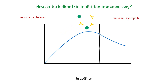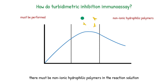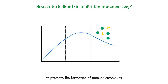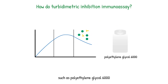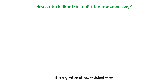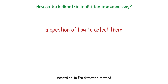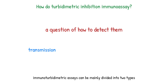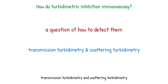In addition, there must be non-ionic hydrophilic polymers in the reaction solution to promote the formation of immune complexes, such as polyethylene glycol-6000. After immune complexes are formed, the next question is how to detect them. According to the detection method, immunoturbidimetric assays can be mainly divided into two types: transmission turbidimetry and scattering turbidimetry.